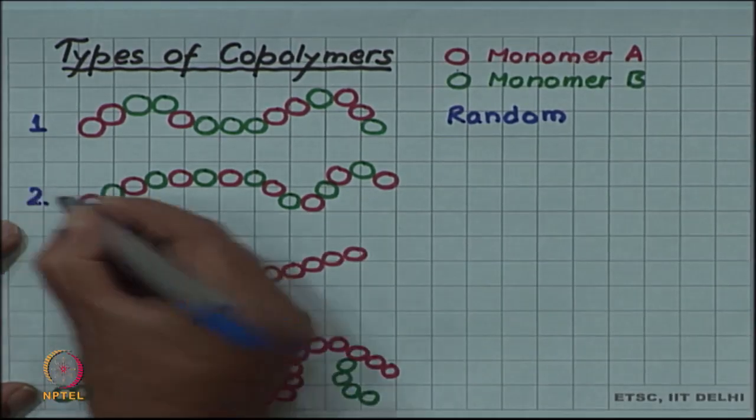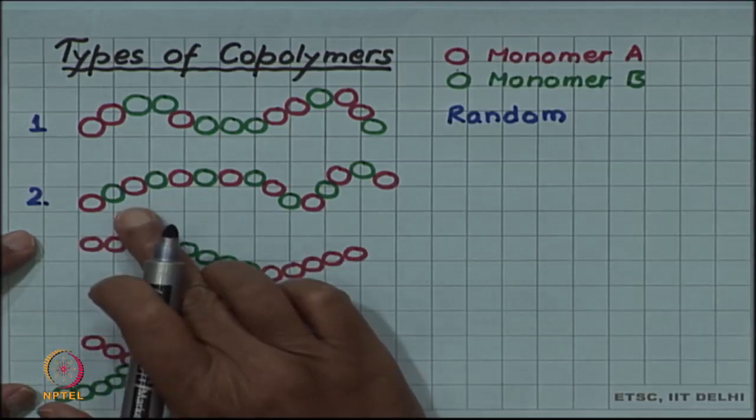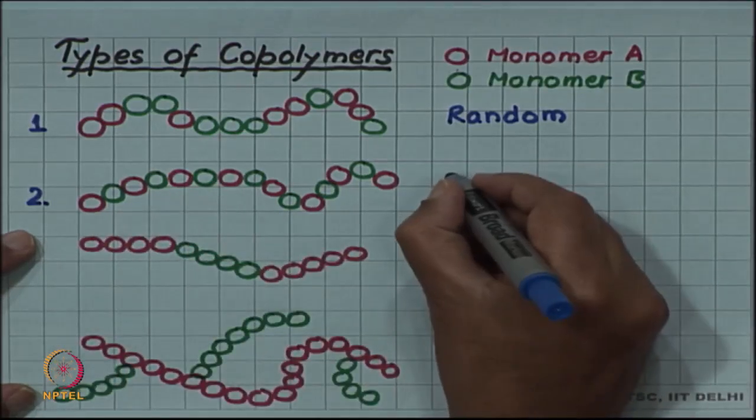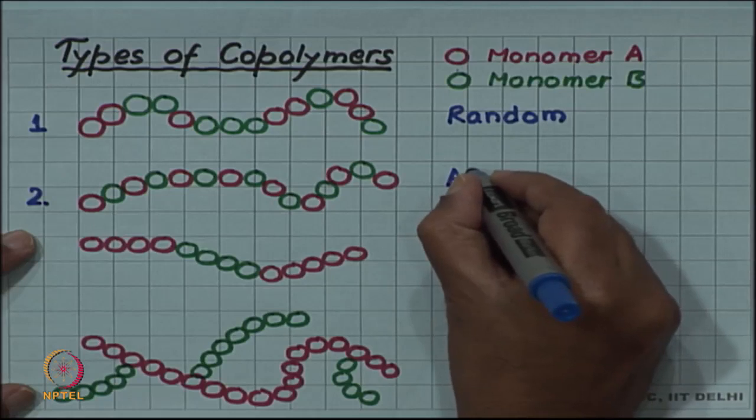But if the monomers are alternating A B A B A B, this is called an alternating copolymer.